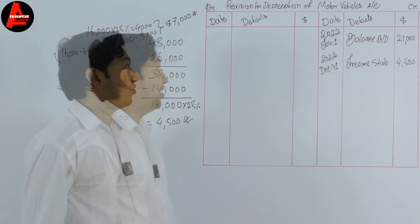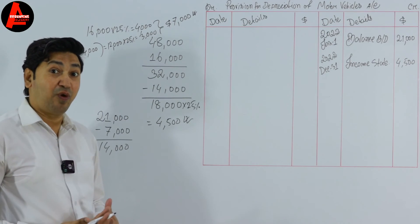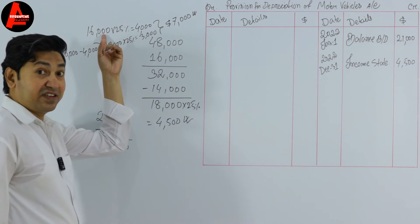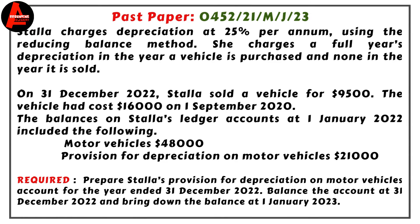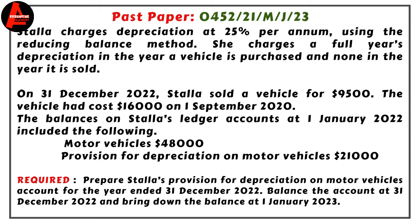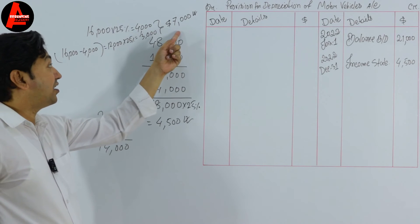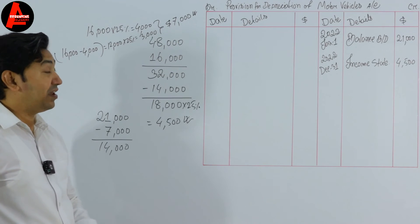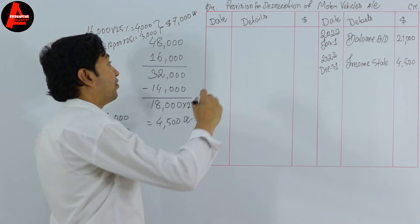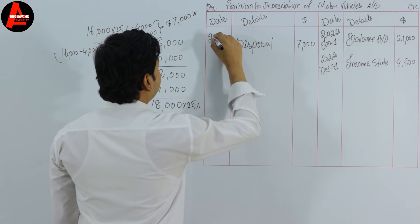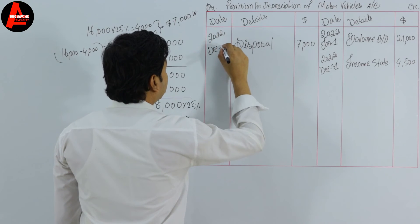The depreciation on the disposed asset also needs to appear in this account. We calculated $7,000 accumulated depreciation on the vehicle that cost $16,000, which was sold on 31st December 2022. Since this asset is no longer in the business, we write on the debit side: 31st December 2022 — Disposal — $7,000.